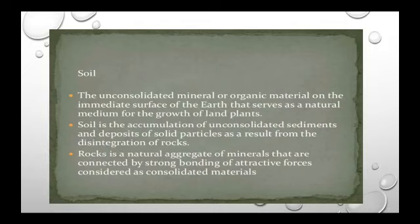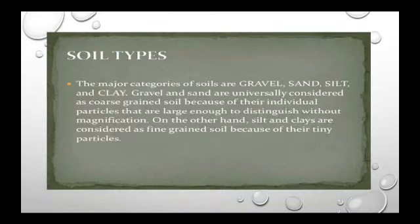So soil is nothing but mineral particles and also organic particles. Next, soil types — the major categories of soils are gravel, sand, silt, and clay. Gravel and sand are universally considered as coarse grain soil, mostly with a grainy texture.